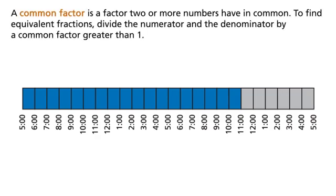A common factor is a factor 2 or more numbers have in common. To find equivalent fractions, divide the numerator and the denominator by a common factor greater than 1.